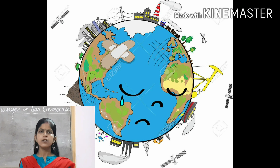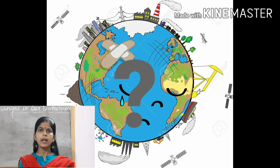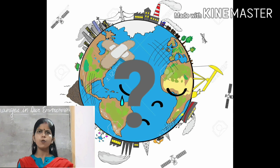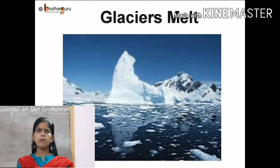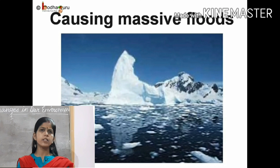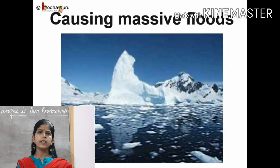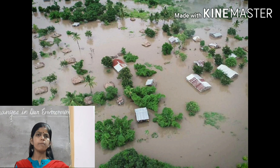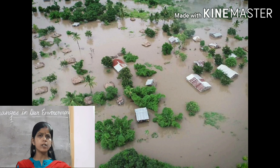Children, do you know what type of destruction? Ice at the poles will melt. The water level in the ocean will rise and that will cause massive floods.